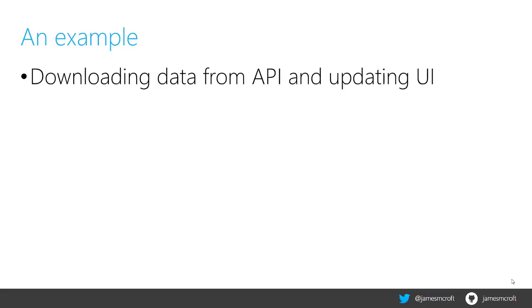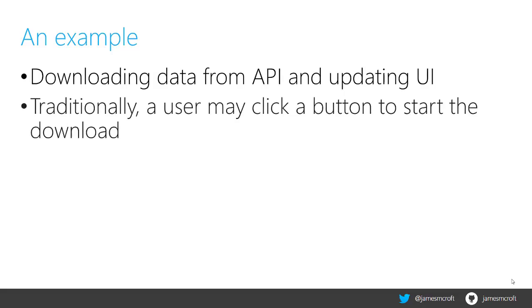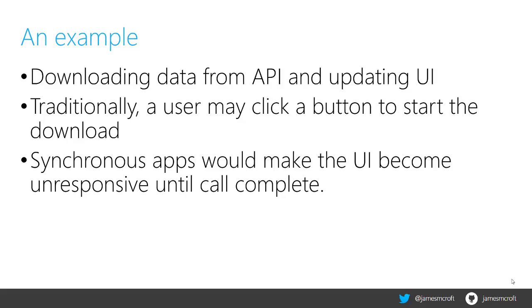To give you a quick example around downloading data from an API and updating the client UI: in a traditional application, a user might click a refresh button to get some new data and update the UI. What this does is essentially lock the UI from responding until that synchronous network request has completed. This can trick Windows into believing that your application has crashed or is becoming unresponsive, particularly if the user is unsure what's happening and starts clicking around the app or tapping on the screen. It's a bad user experience and should always be avoided.